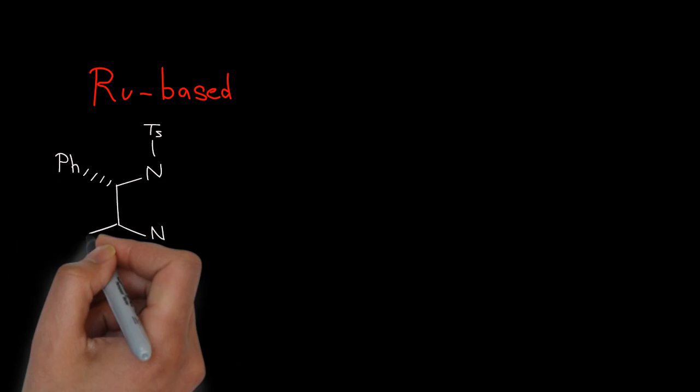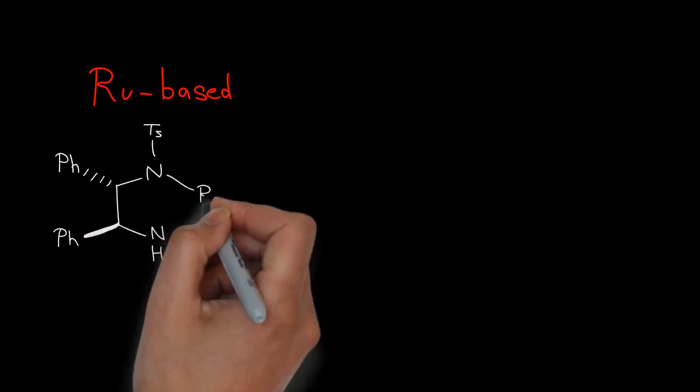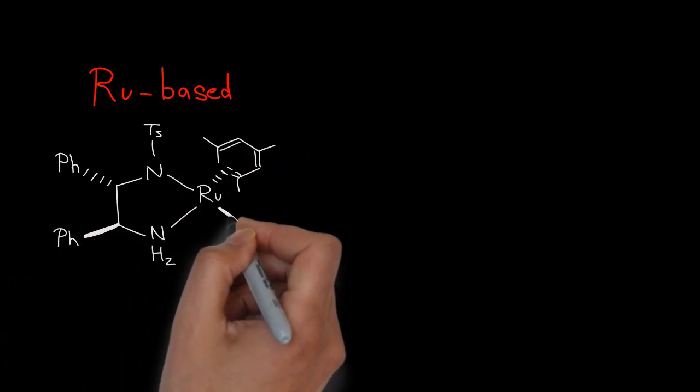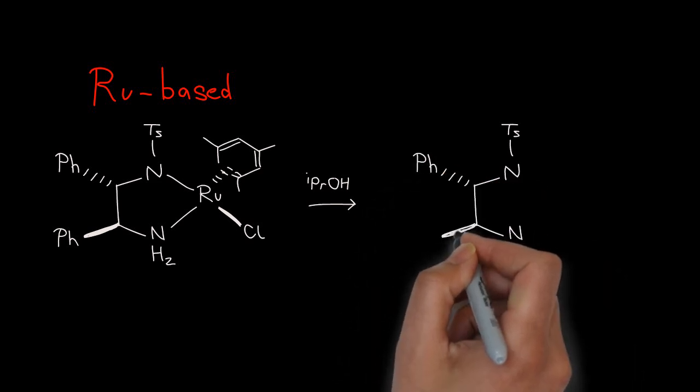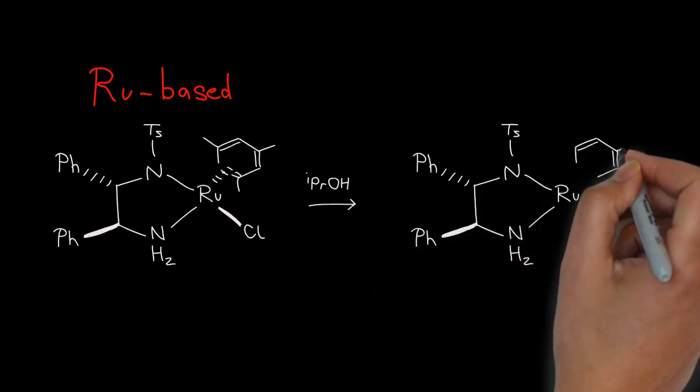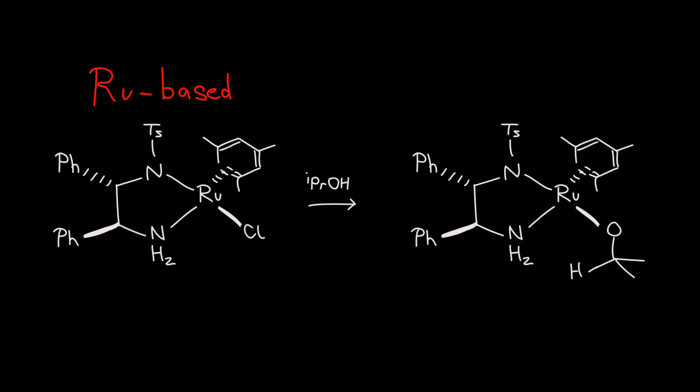The Noyori transfer hydrogenation is a superb example of asymmetric reduction of carbonyls. This reaction is a disproportionation process, like the aluminum-mediated one. It begins with a ruthenium-2-chloride precatalyst. That chloride can be converted to the true catalyst, the ruthenium hydride, by substitution with an alkoxide and beta-elimination.